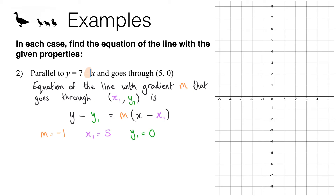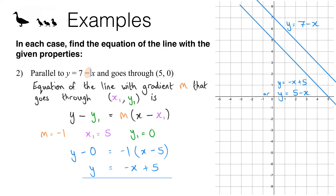Here's what you should have got. We have y minus 0 equals negative 1 times (x minus 5). The left hand side simplifies to y, and expanding the right hand side gives negative x plus 5. So this line has a gradient of negative 1 and a y-intercept of 5. Note that instead of writing y equals negative x plus 5 we could write y equals 5 minus x — that's another way of saying the same thing.